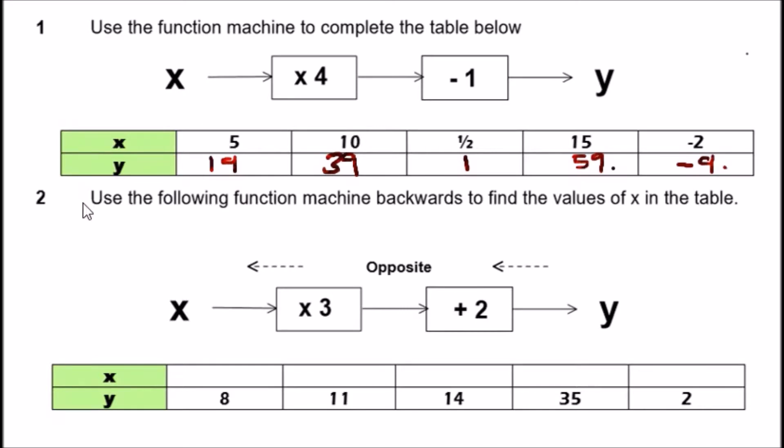Now let's look at number two. Use the following function machine backwards to find the values of x in the table. Here, instead of following the pattern like we did earlier, we're going to be doing it in reverse because we have values of y here. We need to find the original input value from the output.